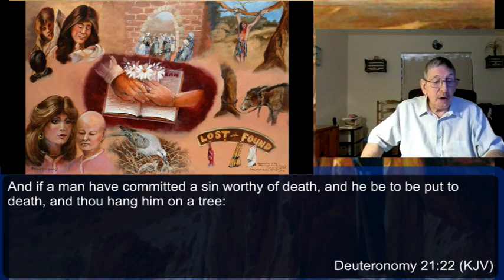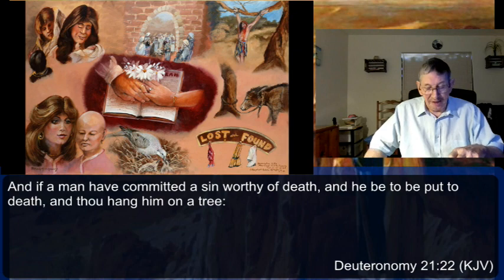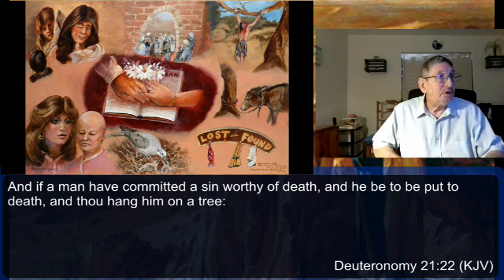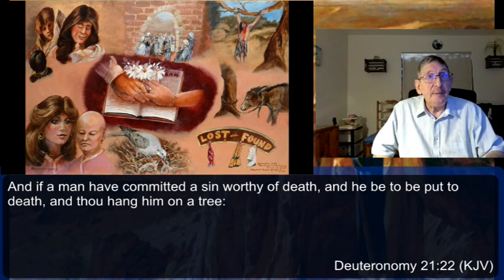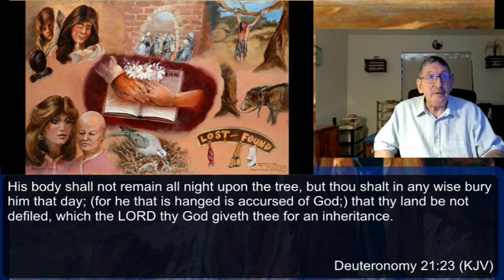Now to the last section, verses 22 and 23 — the curse upon one who hangs on a tree, which ascends all the way to Jesus being cursed for our sakes. 'And if a man hath committed a sin worthy of death and he be put to death and thou hang him on a tree, his body shall not remain at night upon the tree but thou shalt in any wise bury him that day, but he that is hanged is a curse of God, that the land be not defiled which the Lord thy God giveth thee for an inheritance.'